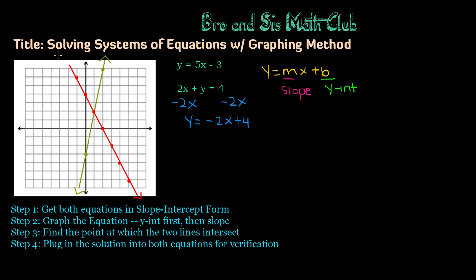All right, so we've completed step 2, which was to graph the equation. Step 3 is to find the point at which the two lines intersect. And as you can see, that point is right here. And the point is 1, 2. And that is the solution to this system of equations.